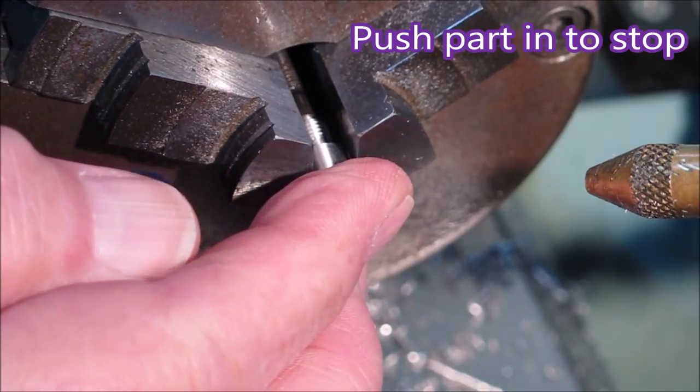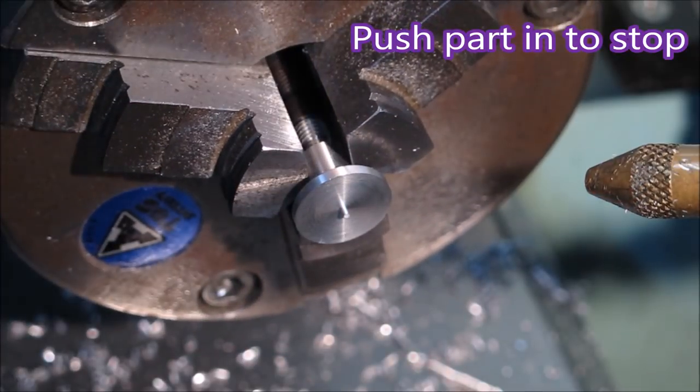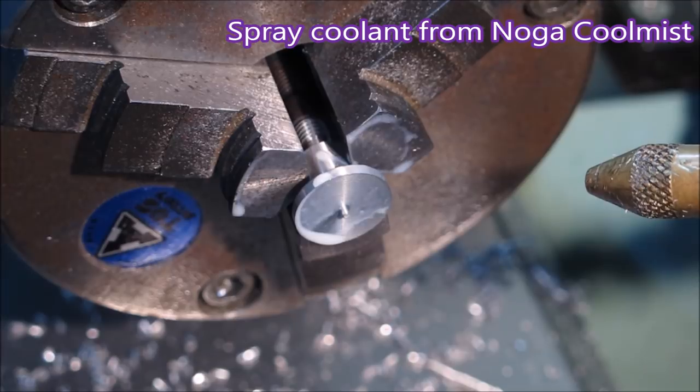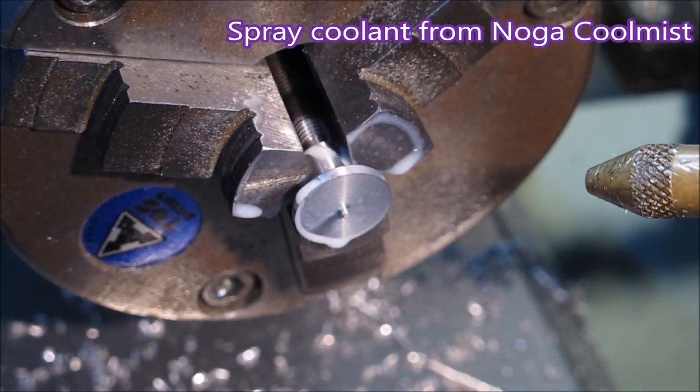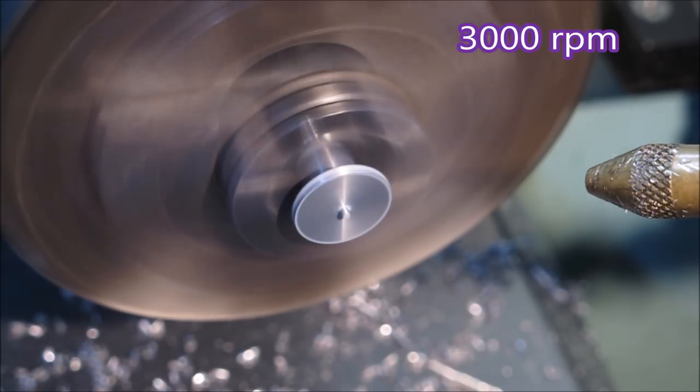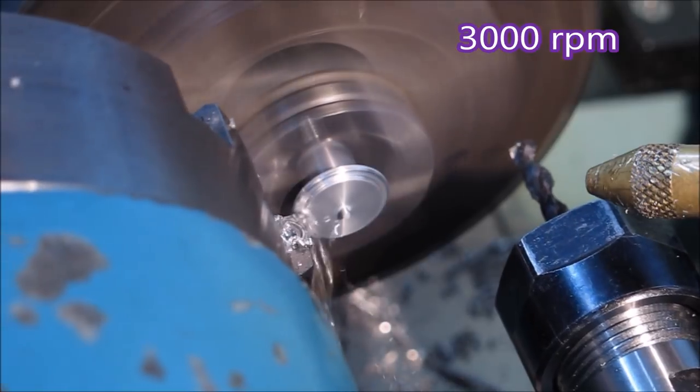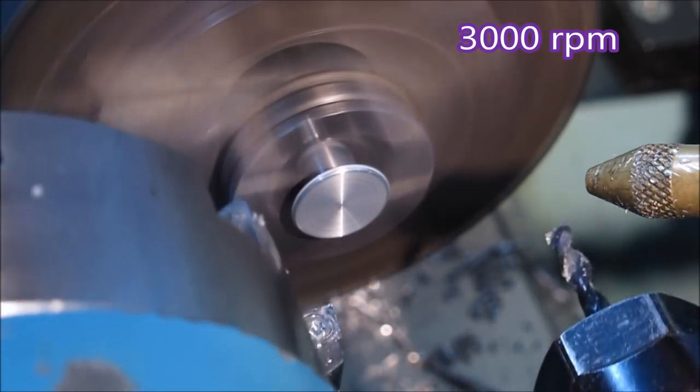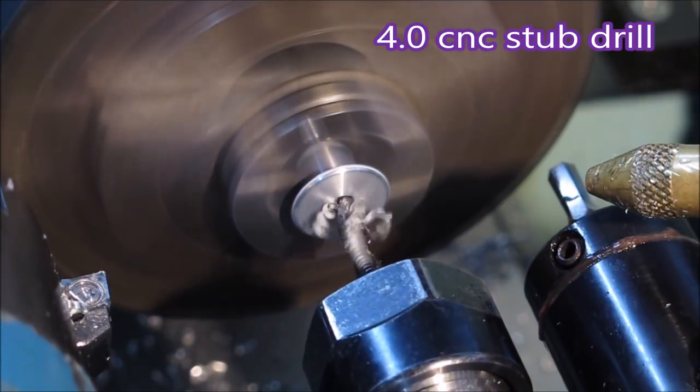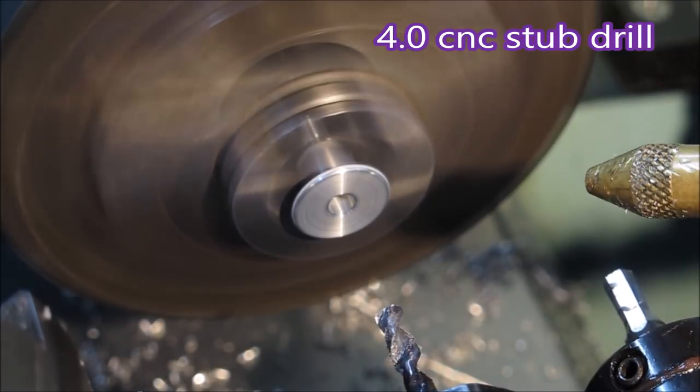Now we just turn, then drill, and then broach. It's a CNC stub drill—they work really well. There's the chamfer.